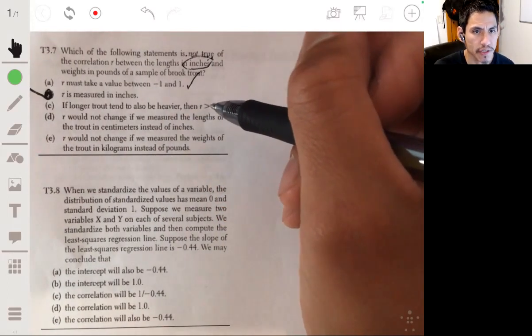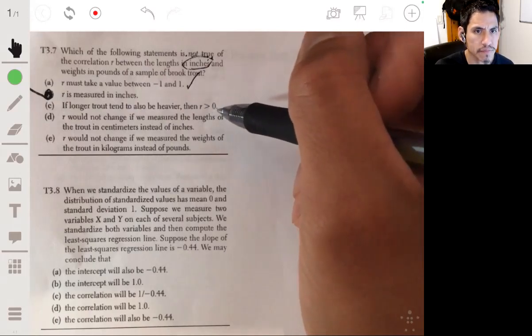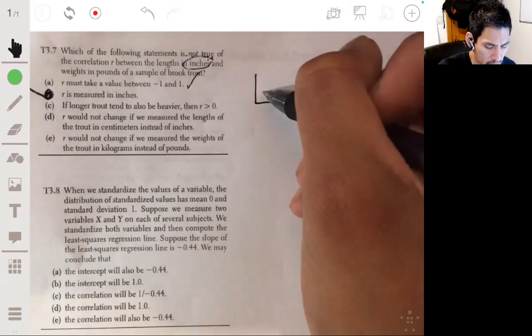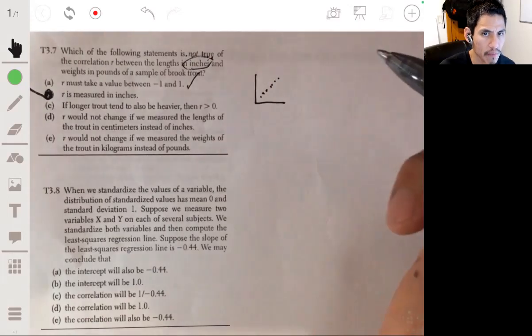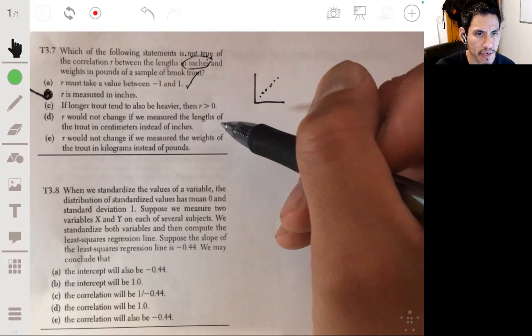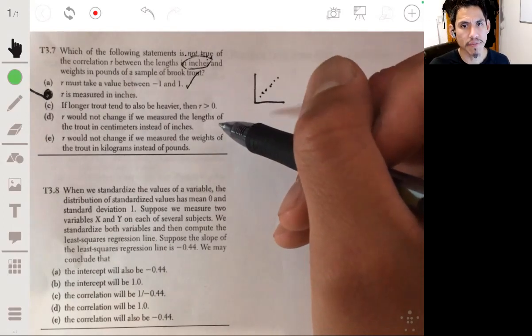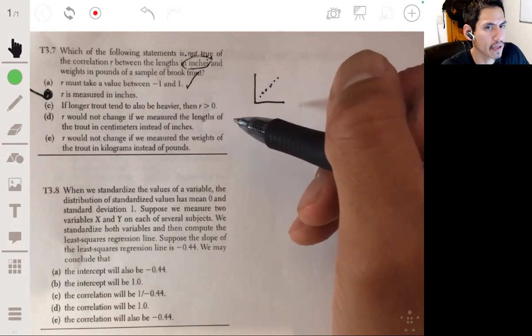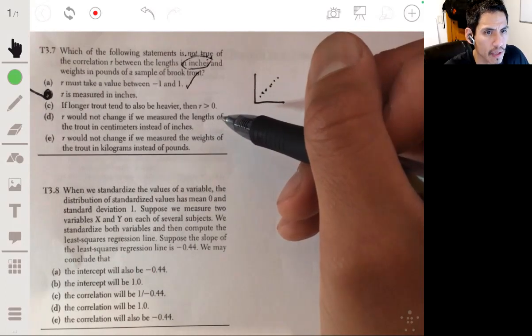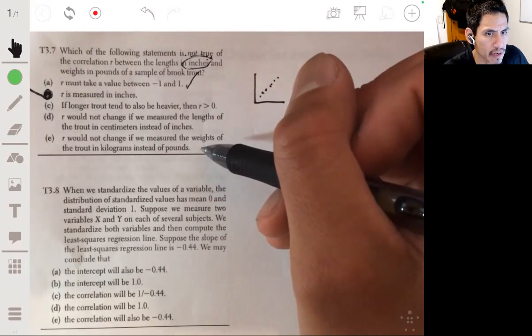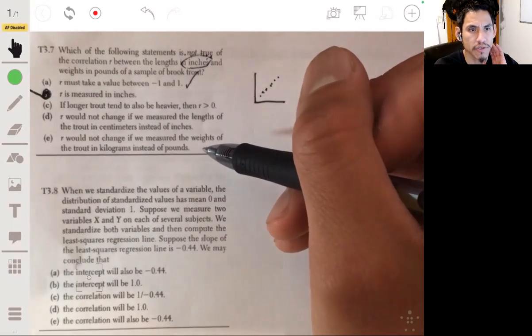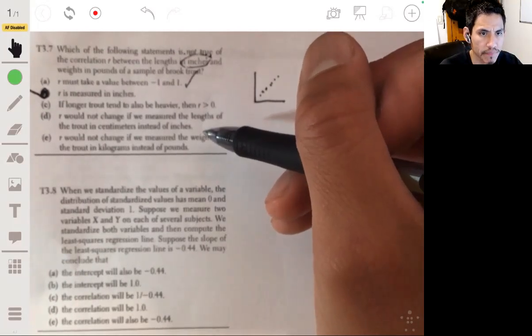C, if longer trout tend to also be heavier, then R is greater than zero. That would be true because that would be like a positive correlation, so you would have a trend line going upwards. D, R would not change if you measure the length of the trout in centimeters instead of inches. Again, it doesn't matter what the units are. R will not change, that is also true. And then E, R would not change if you measure the weights of the trout in kilograms instead of pounds. Same thing. It's not a measurement of units, so D and E would be the same, it would be true.